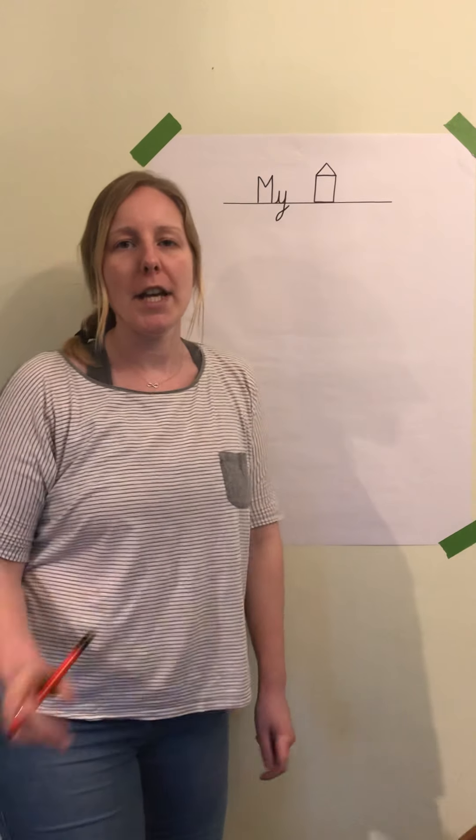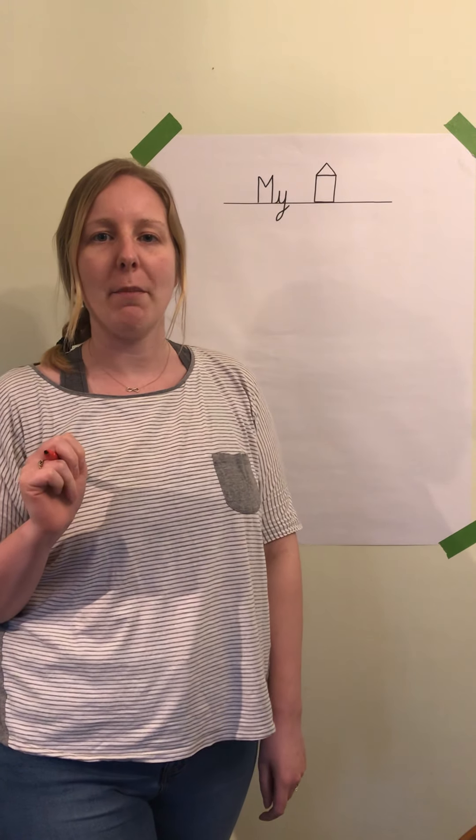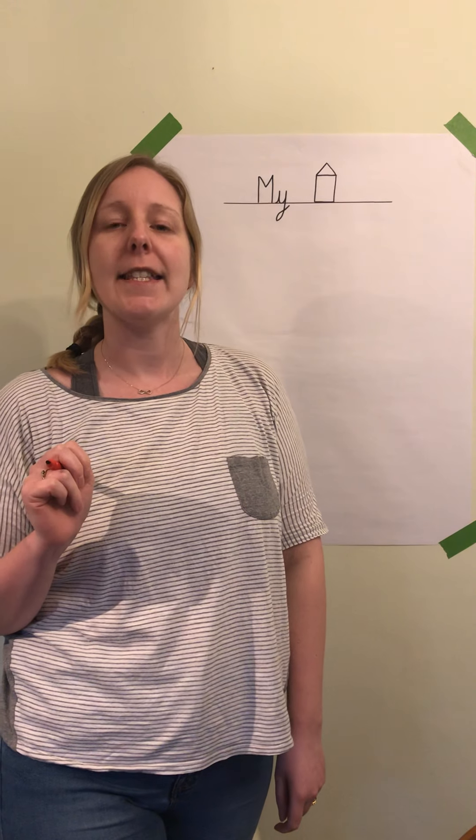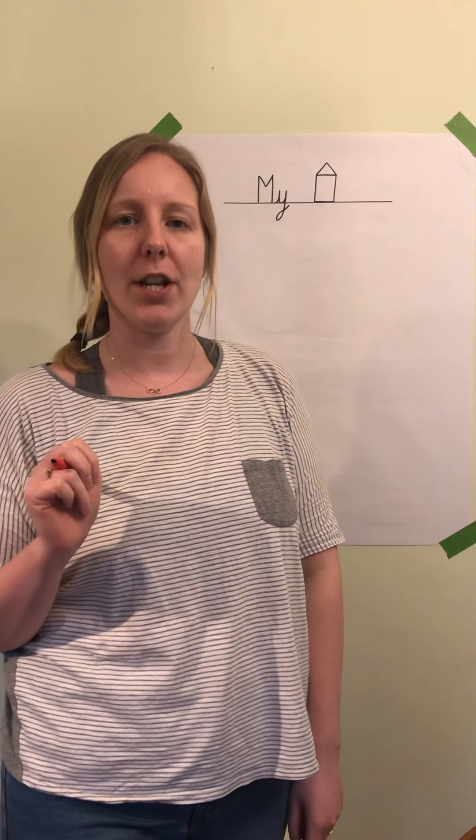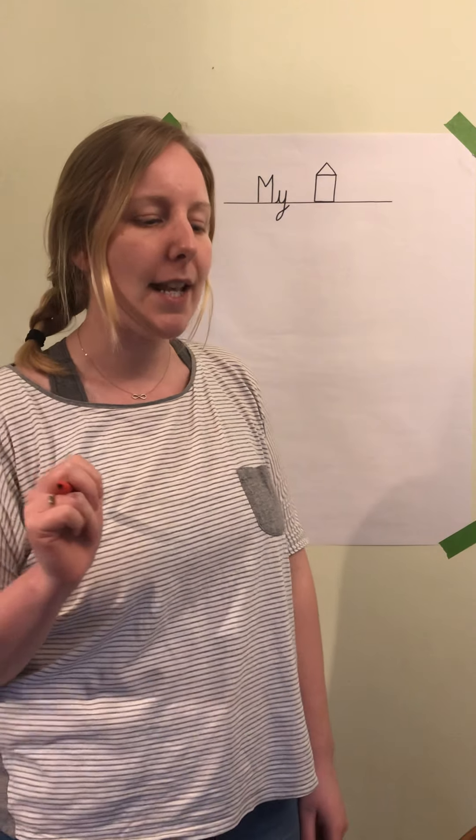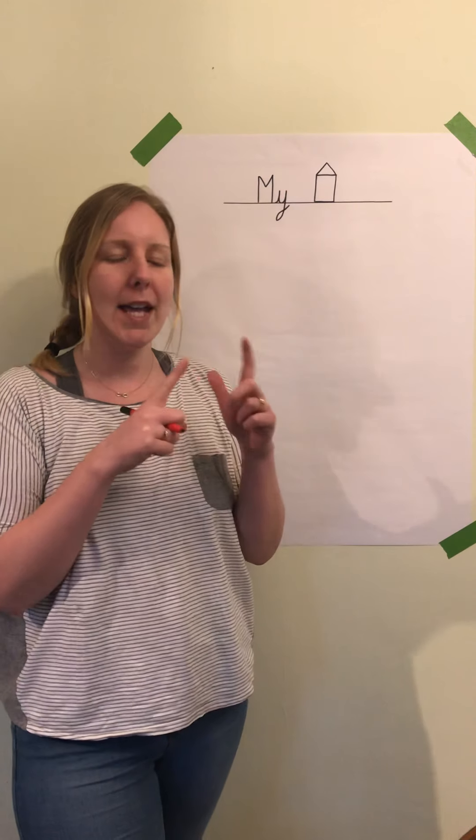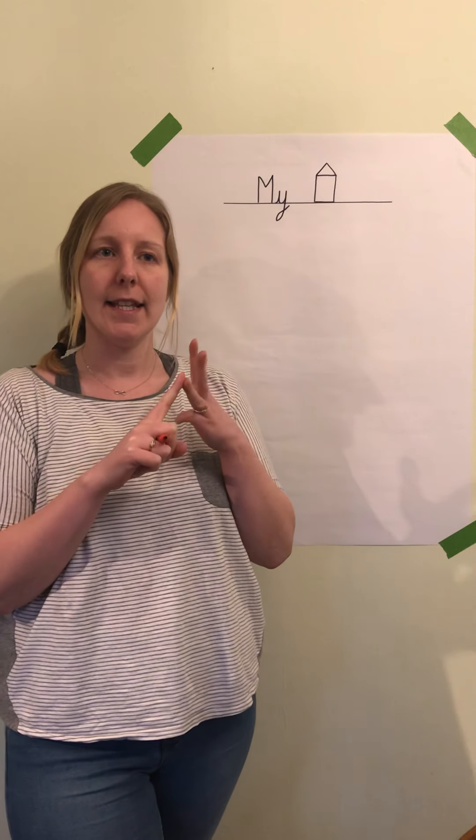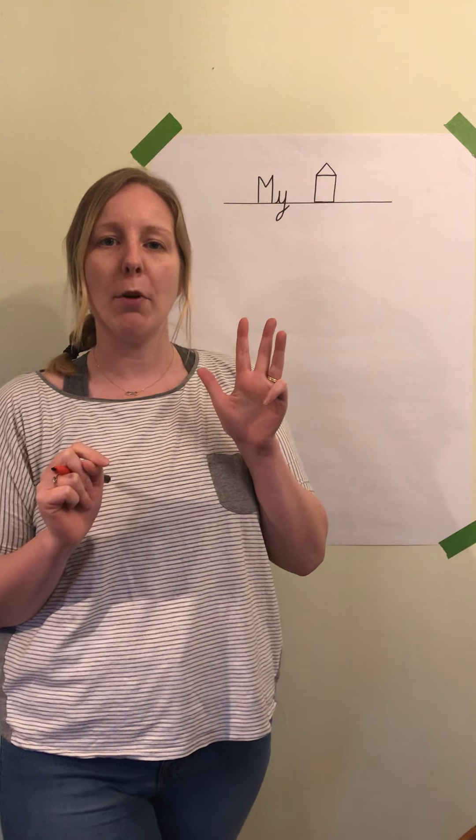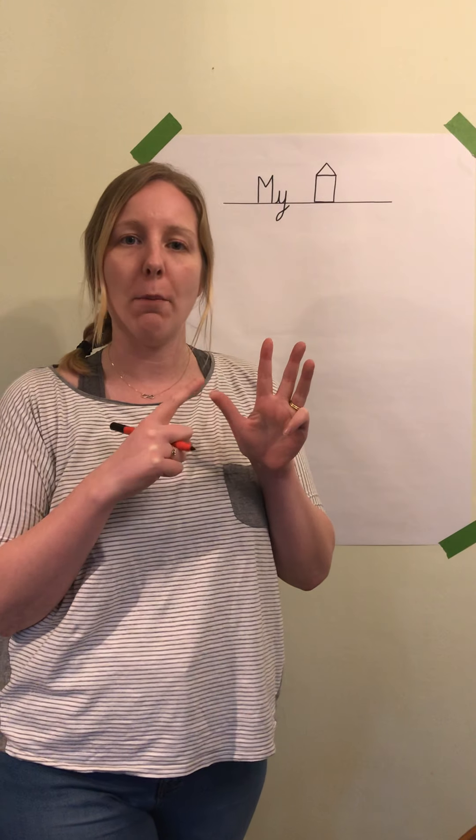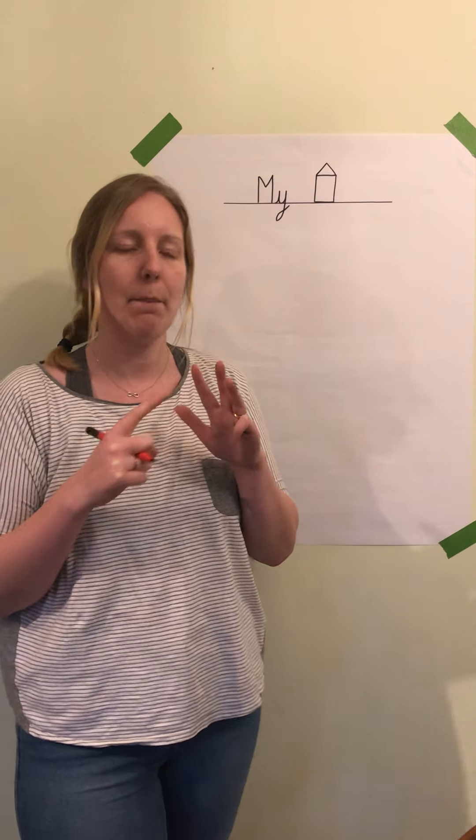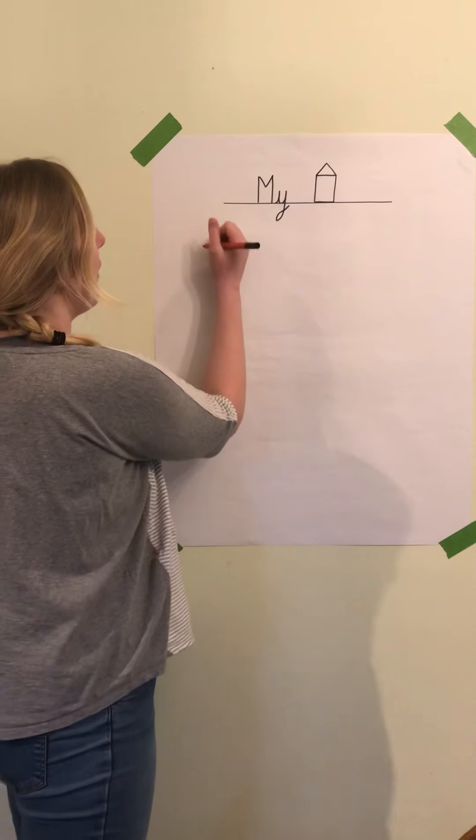So the first piece of information about my house was that it is a semi-detached house. So the first sentence is going to be 'my house is semi-detached,' but we're going to write that using a combination of words and pictures. So we've got 'my.'